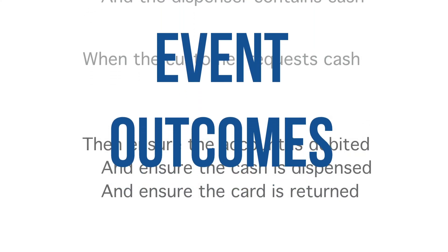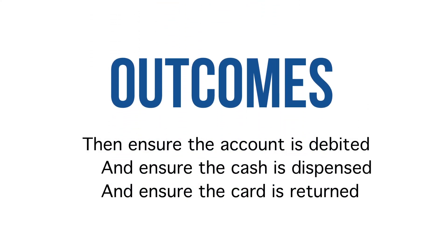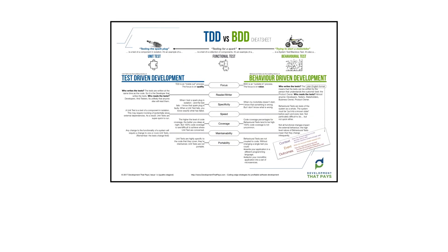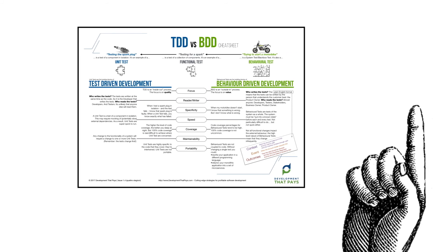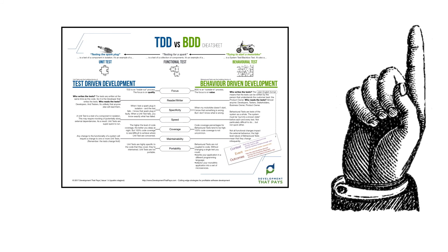We've one more section to look at — the outcomes section. But just before we get there, a quick note that I have a cheat sheet for you: the TDD vs BDD Cheat Sheet. I put it together with the assistance of the Development That Pays community, and it details the key differences between TDD and BDD. You'll find a link to it in or around this video. Click the link, follow the instructions, and it's all yours.